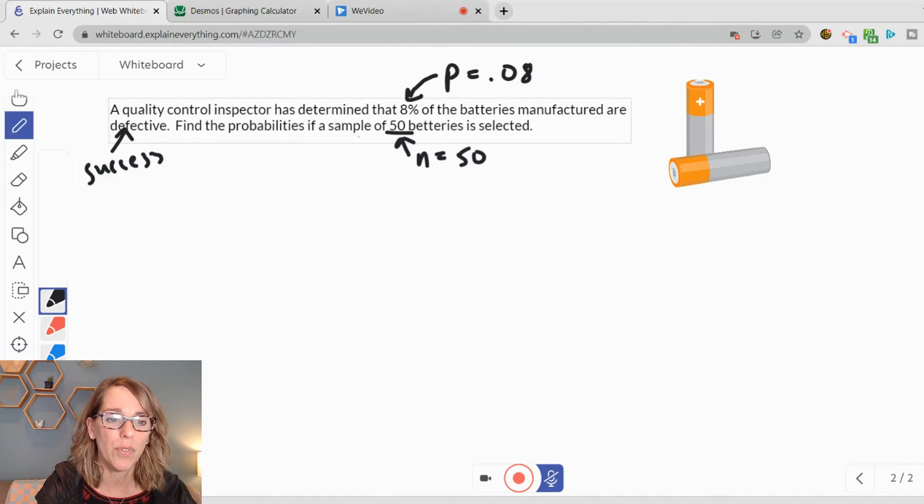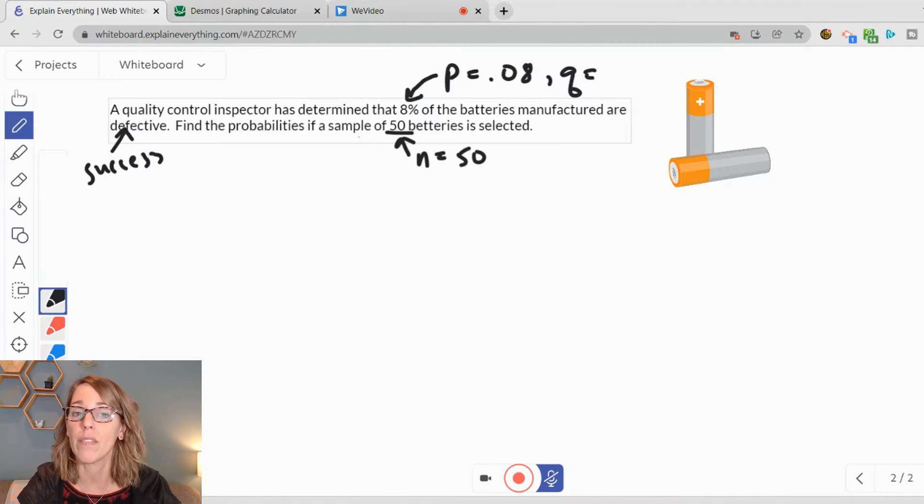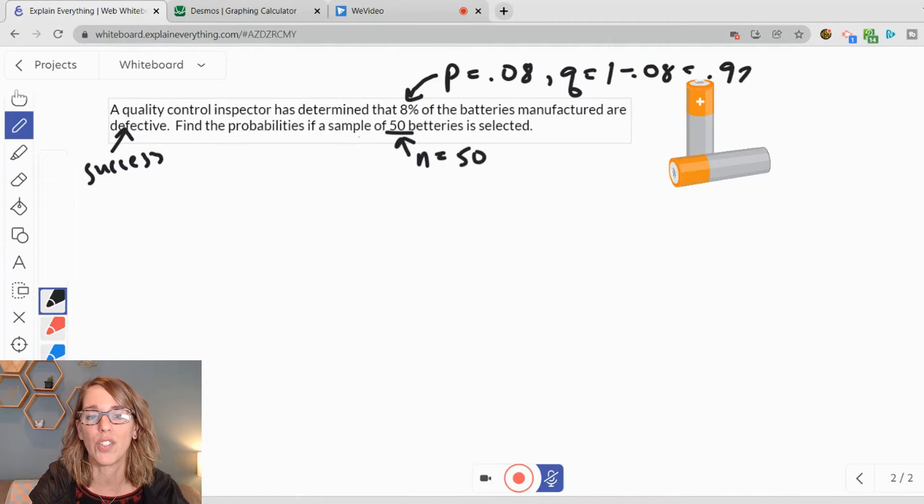As we continue to go through here, we've got n, we've got P. Let's go ahead and put Q up here as well. Q would be the probability of a failure, which would be not defective. That's going to be 1 minus 0.08, so Q is going to be 0.92. Those are going to allow us to apply our probability formula.